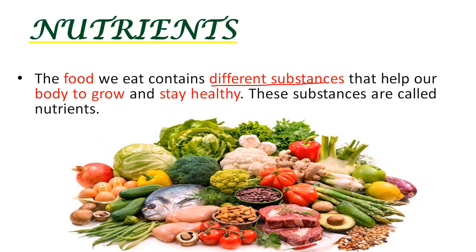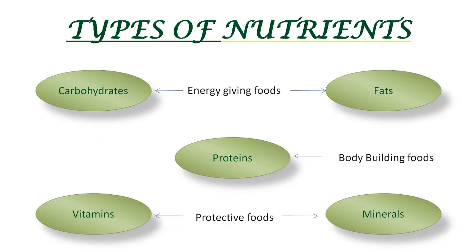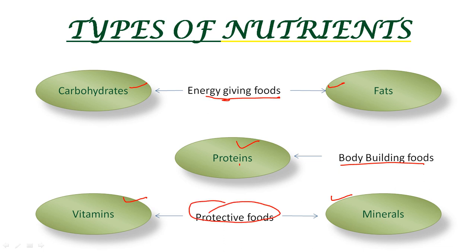Nutrients are the different substances that help us to grow and stay healthy. There are five different types of nutrients: carbohydrates, fats, proteins, vitamins and minerals. Carbohydrates and fats are energy-giving foods. Proteins are known as body-building foods. Both vitamins and minerals are called protective foods.